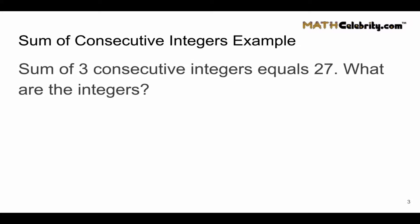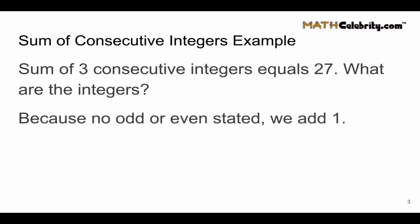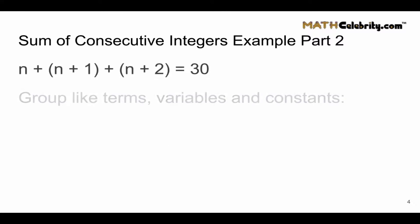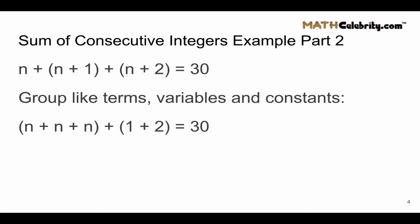Let's start with an example: the sum of three consecutive integers equals 27 — what are the integers? Because they didn't state the word odd or even, we're going to add one. That's our first clue. We'll add n plus n plus 1 plus n plus 2 equals 30. This is our consecutive integer equation. Moving to part two, we group like terms — variables with variables and constants with constants — so we rearrange to get 3n plus 3 equals 30.